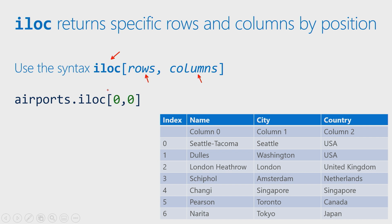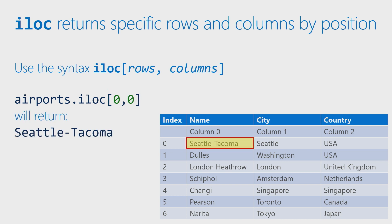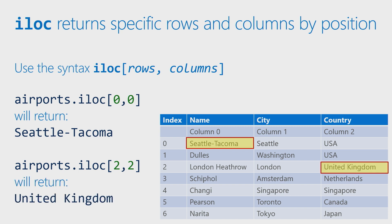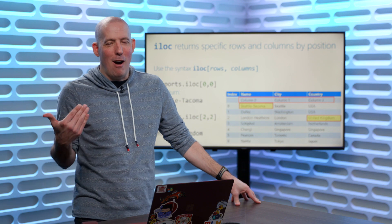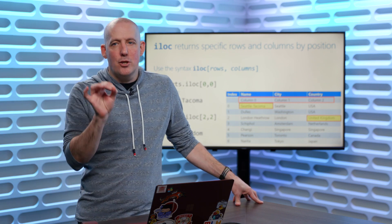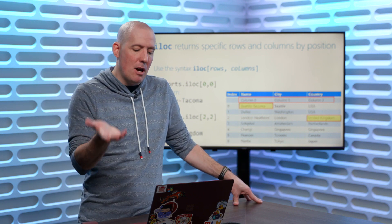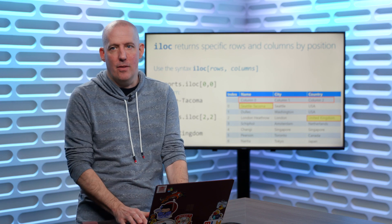So if I do 0, 0 — as you might expect — that's going to give us Seattle Tacoma. If I say 2, 2, that's going to count down again, zero-based, so 0, 1, 2 — it's actually going to give us the third row and the third column. That's going to give us, in this case, United Kingdom. You might notice on the slide — and this will be true on the next couple of slides as well — those column zero, column one, column two labels are not actually part of the DataFrame; they're just there to help make the demo easier so you can see where 0, 1, and 2 actually are.